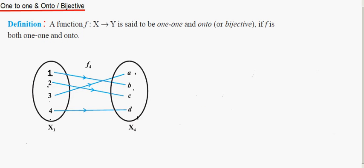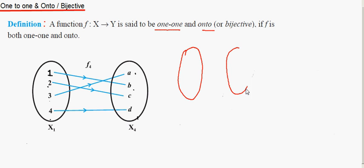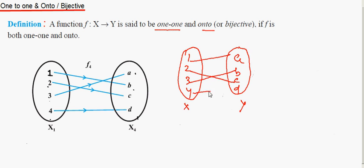The third type is one-to-one and onto, which is called bijective. A function f from X to Y is said to be bijective if it is both one-to-one and onto. One-to-one means distinct values of x have distinct images in Y.